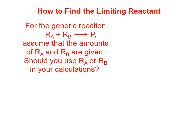For the generic reaction, reactant A plus reactant B yields a product. Assume that the amounts of reactant A and reactant B are given. Should you use the amount of A or the amount of B in your calculations?